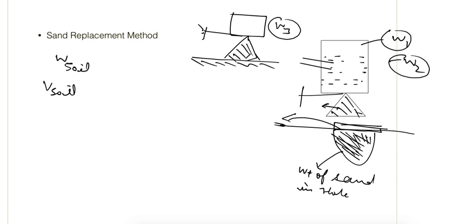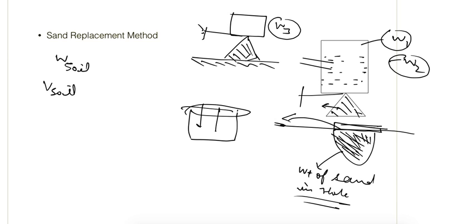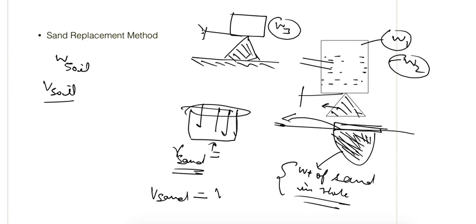Once the weight of sand in the hole is known, we take a container of given volume, fill it with the same sand, and measure its weight. Since we know both the weight and volume, we can calculate the unit weight of the sand. Using the weight of sand in the hole and the unit weight of the sand, we can find the volume of sand in the hole — which is equal to the volume of soil. With weight of soil and volume of soil both known, we can calculate the bulk unit weight.